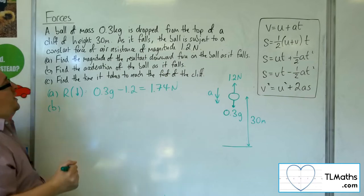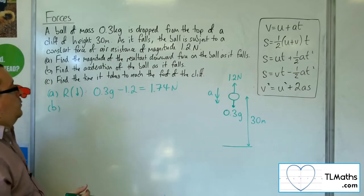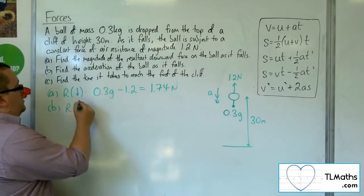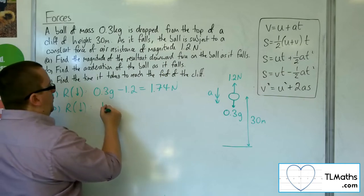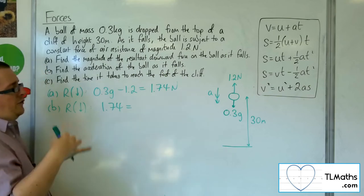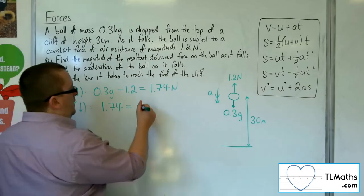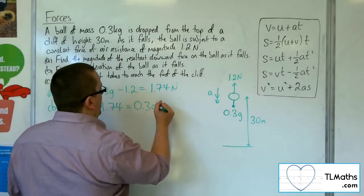Part b: find the acceleration of the ball as it falls. Well, we now know when resolving downwards that we've got on the left-hand side the net force is 1.74, and that's got to be equal to the mass times acceleration, so 0.3a.